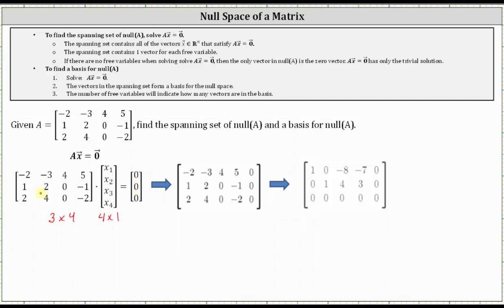The next step is to write the corresponding augmented matrix. The first row is negative two, negative three, four, five, zero. The second row is one, two, zero, negative one, zero. And the third row is two, four, zero, negative two, zero.